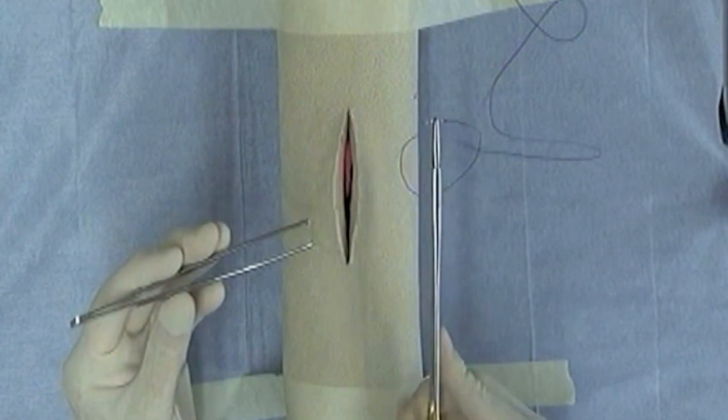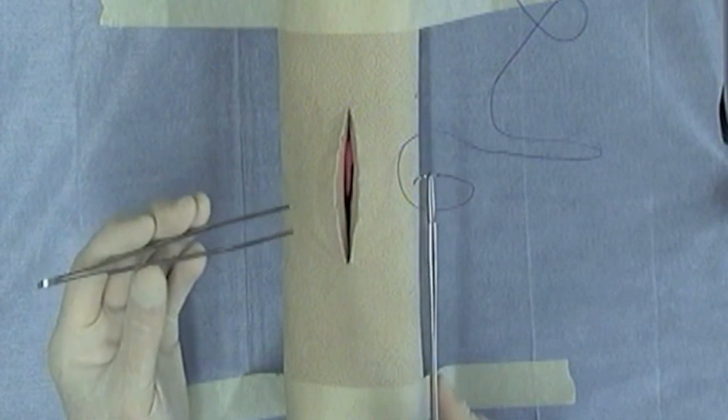Generally, if you're right-handed, you're going to have the needle holders in your right hand and your thumb forceps in your left hand.